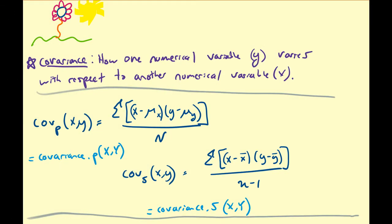Hello there, and in this video we're going to talk about how to measure the variation between two numerical variables, and we're going to refer to them arbitrarily as X and Y. So this measure of variation is going to be referred to as the covariance between two data values, X and Y.